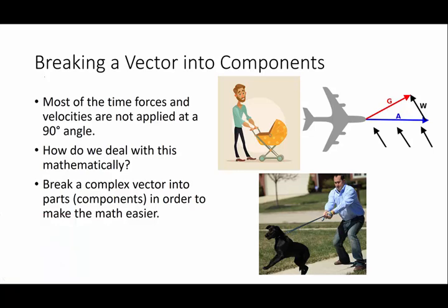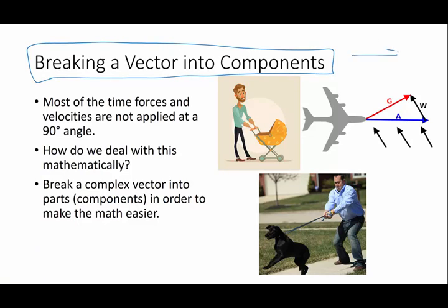This time we are going to talk about breaking vectors into components. Before when we were adding vectors, every single two vectors happened to be at a 90 degree angle from each other, and that's a very special situation. Most of the time, forces and velocities are not going to be at a 90 degree angle. So how do we deal with this mathematically?